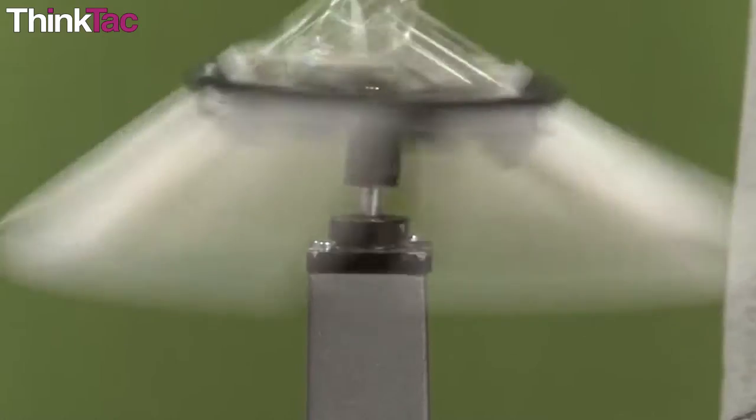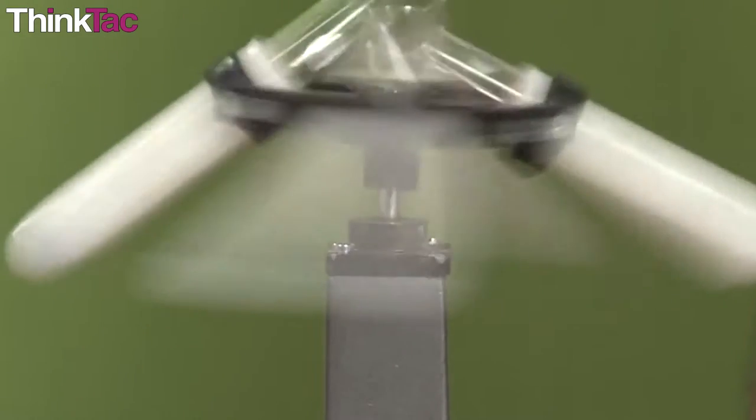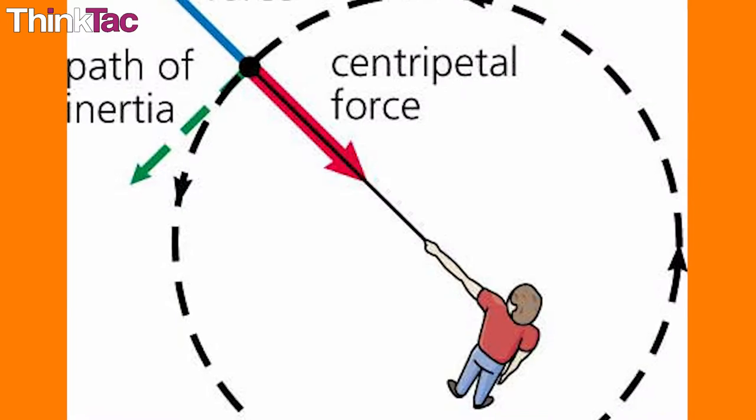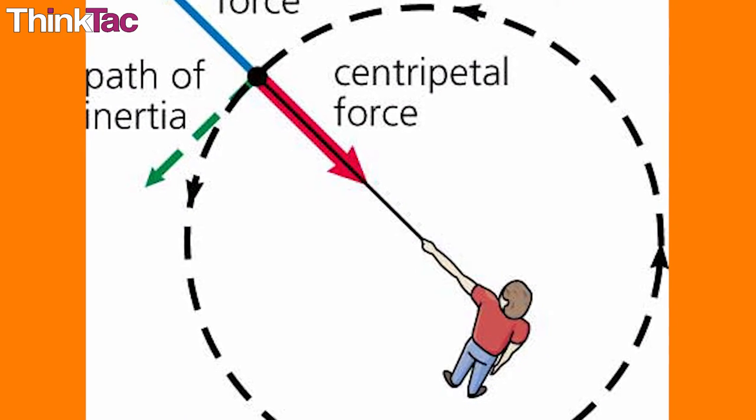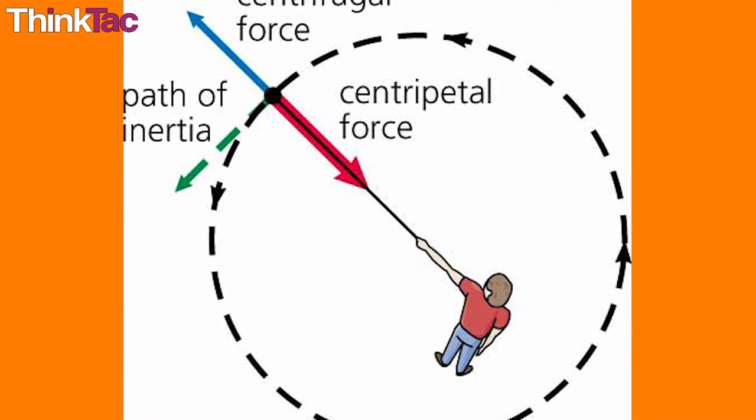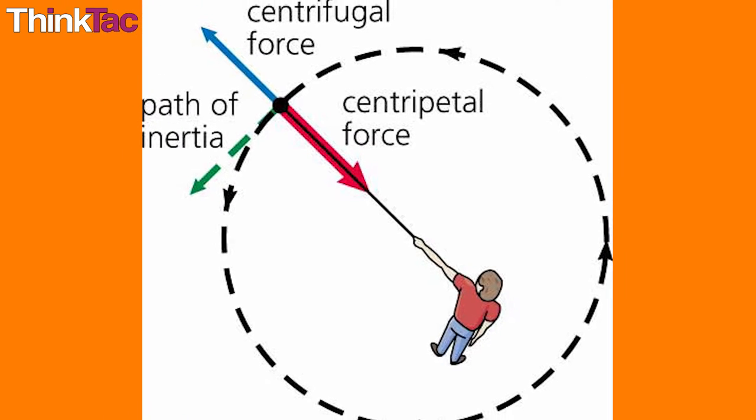Centrifugation is a process where a mixture is separated through spinning, more precisely through the centrifugal force that particles experience due to inertia. Any object moving in a circle at a steady angular velocity is subject to an outward directed force known as centrifugal force.